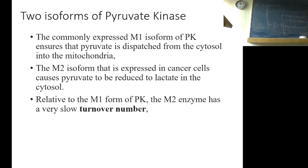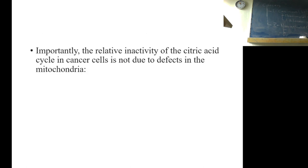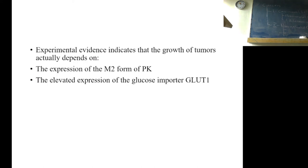Relative to M1 form, the M2 enzyme has very slow turnover number. This results in a backup of glycolytic intermediates and their diversion into biosynthetic pathways. Importantly, relative inactivity of citric acid cycle in cancer cells is not due to defect in mitochondria. They are normal and fully capable of receiving pyruvate and processing it in citric acid cycle. Experimental evidence indicates that the growth of tumors actually depends on expression of M2 and elevated expression of glucose importer, GLUT1.